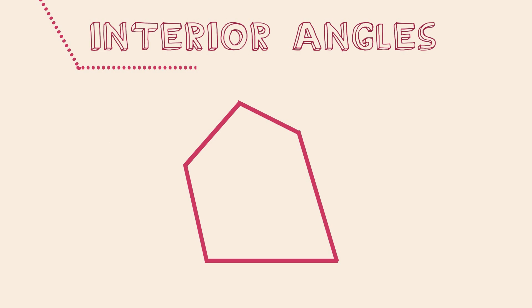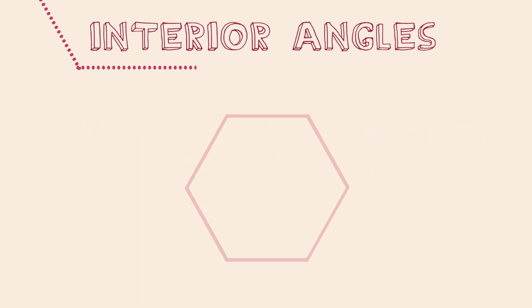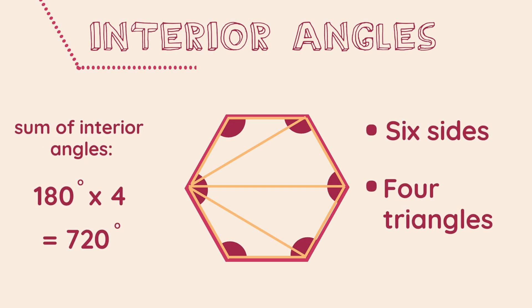Next we have an irregular pentagon in which we can split into three triangles. Therefore the sum of the interior angles will be equal to three lots of 180 degrees. Here we have a hexagon which can be split into four triangles. So the interior angles will add up to four lots of 180 degrees.